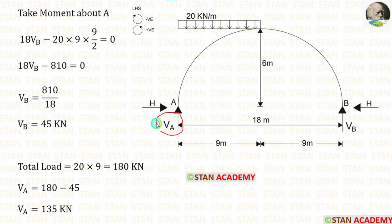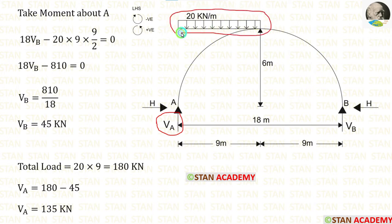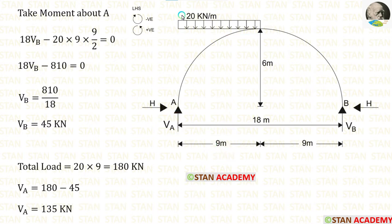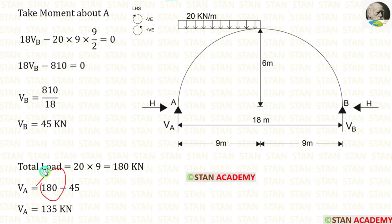Now let us calculate VA. To find VA, consider the total load. There is only one load in this arch — the UDL of 20 kilonewton per metre acting over 9 metres. Multiplying 20 by 9 gives a total load of 180 kilonewtons. Total load minus VB gives VA equal to 135 kilonewtons.